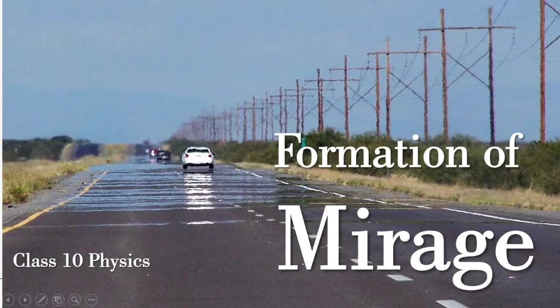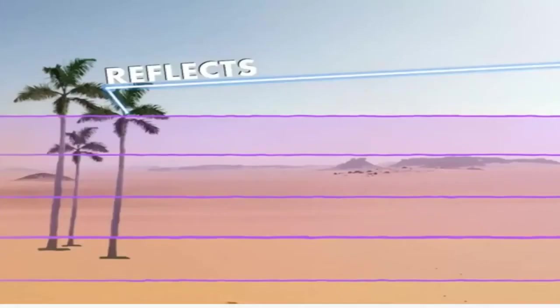Mirages are normally seen in hot places, in hot summer season, and they are very common in deserts. In deserts, people have to travel a lot — sand and sand, very hot, no water, nothing. So people start getting illusions like, oh, there's water over there. This phenomenon is also because of atmospheric refraction, but at a local level — atmospheric refraction at a local level, not in the atmosphere in space.